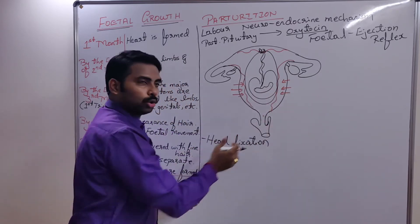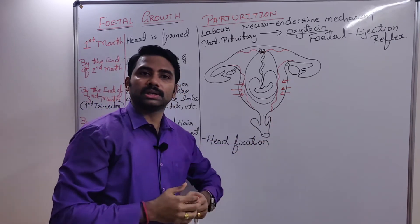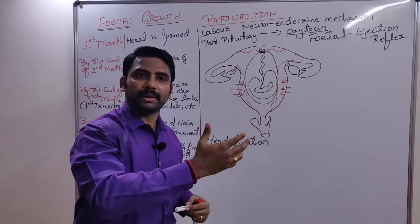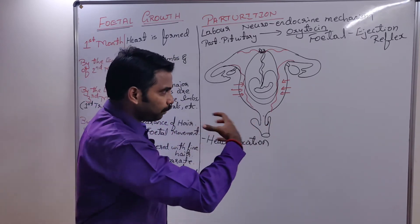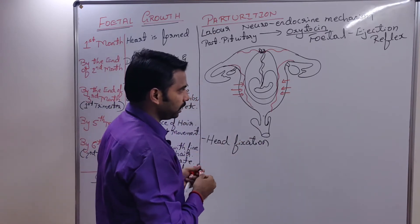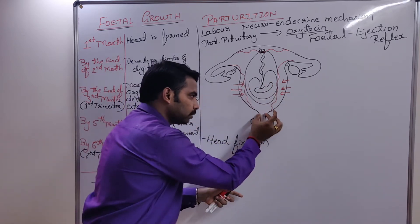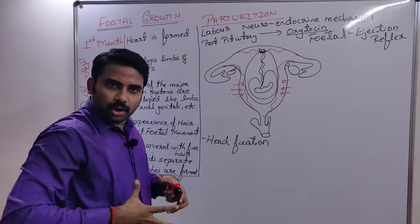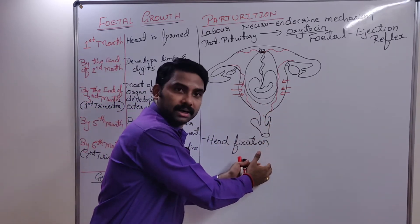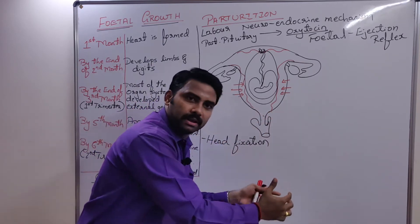This process of fluid going out continues for around 6 to 12 hours. After that, in the next 45 minutes to 1 hour of continuous contraction, the fetus is finally expelled out through the birth canal. Because of the repeated contractions, the baby comes out through the birth canal head first.